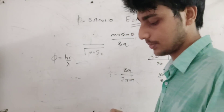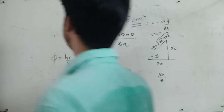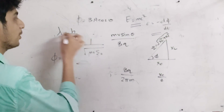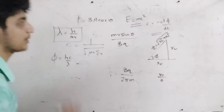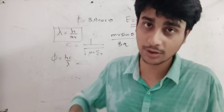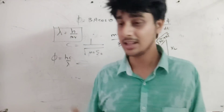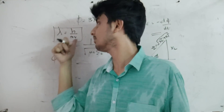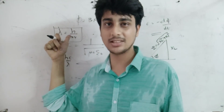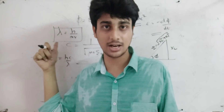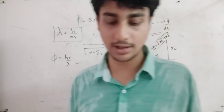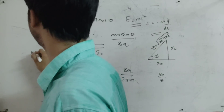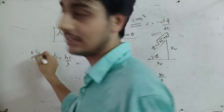Photon momentum. Lambda is equal to h by mv — de Broglie wavelength. At this point, wavelength, mass, velocity and h. This is the same equation. Kinetic energy using electron — eV₀.